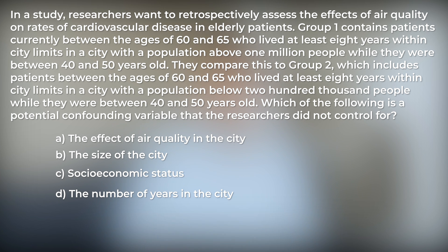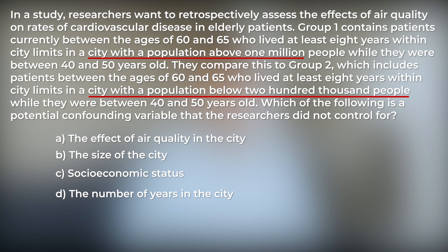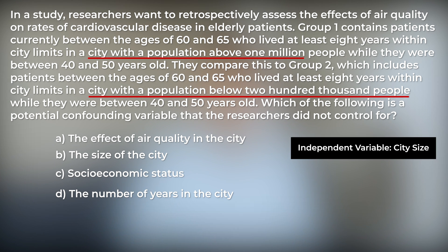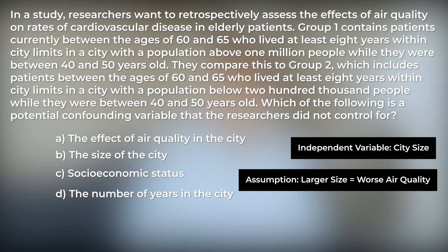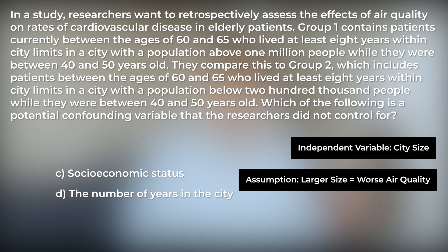Before we answer this question, let's identify our important experimental variables. What are the researchers changing on purpose? The only difference between group 1 and group 2 is the size of the city. So, city size is our independent variable — the researchers are using city size as an indirect measure of air quality, making the assumption that a bigger city has worse air quality. Therefore, answer choices A and B are incorrect as they describe the independent variable in different ways.